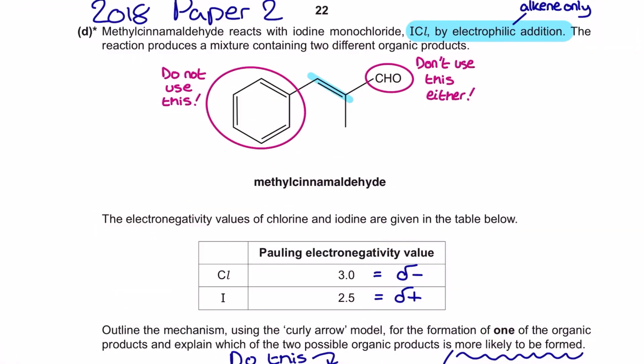All right, so as I mentioned, this is from the 2018 OCR-A chemistry exam in A-level chemistry paper 2. What we've got here is a structure of methylcinnamaldehyde and it's reacting with iodine monochloride (ICl) by electrophilic addition. The reaction mixture produces a mixture containing two different organic products.